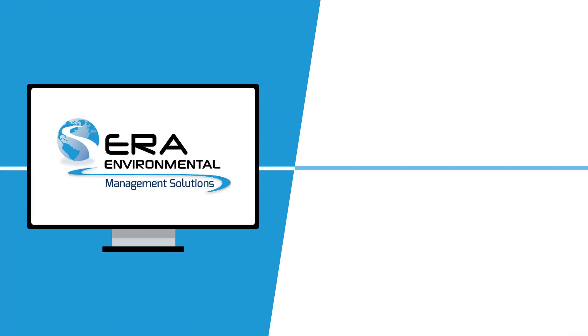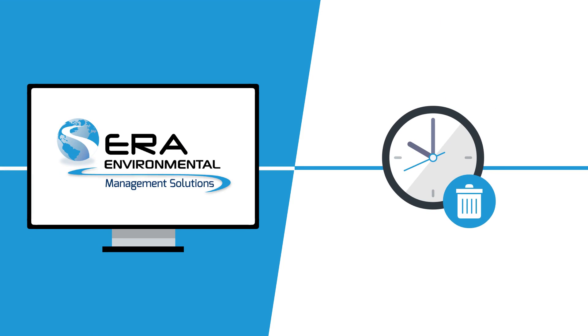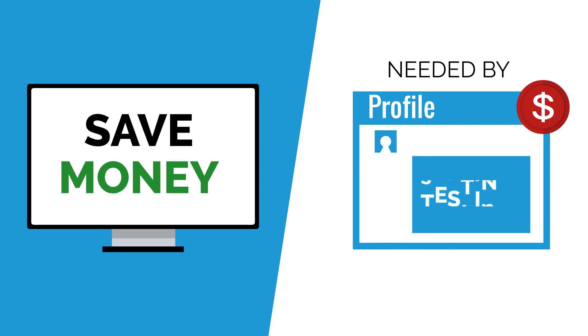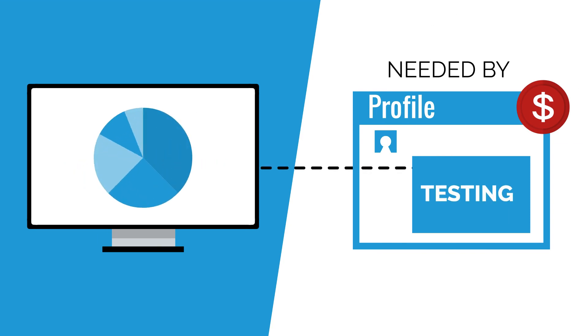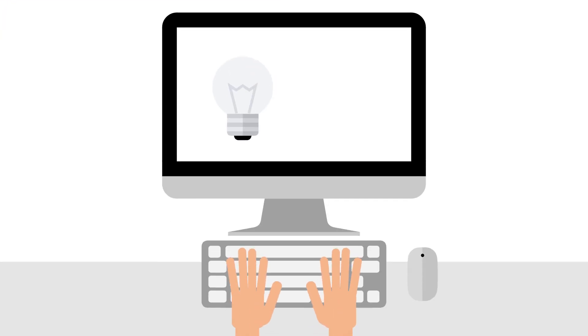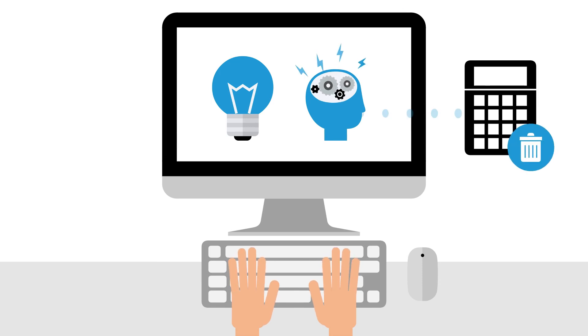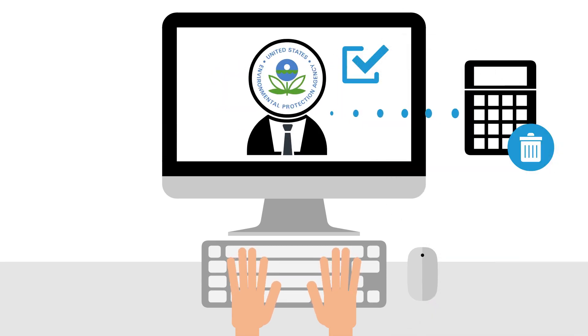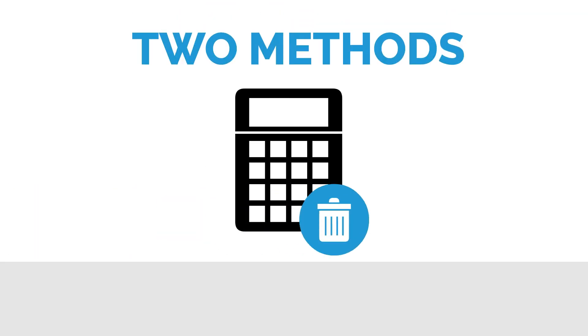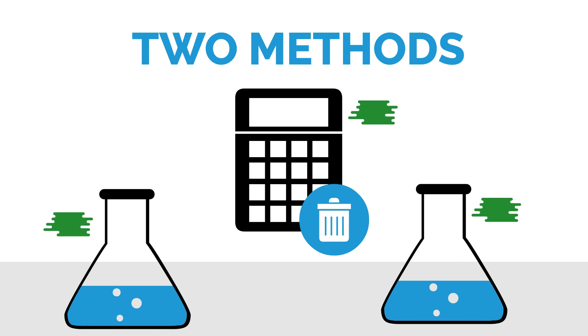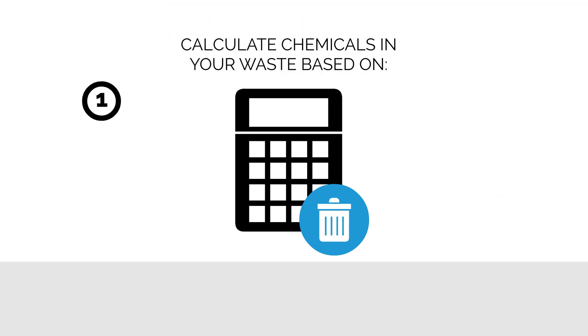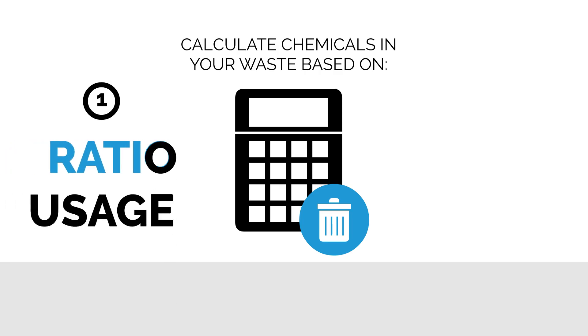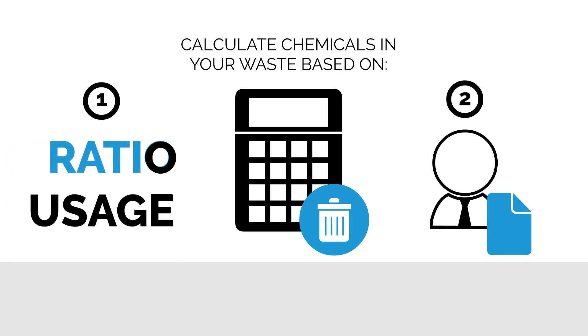ERA software provides tools to streamline the time spent tracking waste generated. Save money by avoiding expensive waste profiling needed by testing each waste stream. ERA's waste software offers innovative and comprehensive waste calculation models verified by EPA auditors. ERA offers two methods to calculate your waste credits and speciated chemicals in each waste stream to fit your unique needs, allowing you to calculate chemicals in your waste based on a ratio of usage or based on a profile or analytical report.